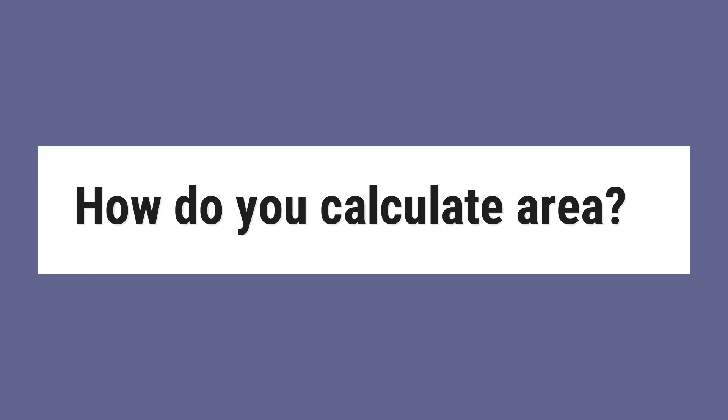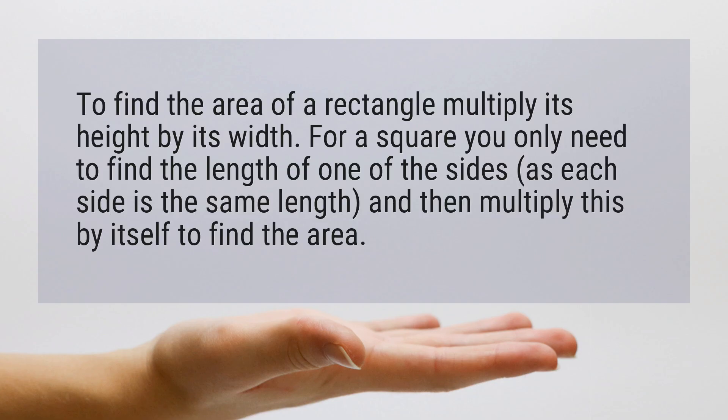How do you calculate area? To find the area of a rectangle, multiply its height by its width. For a square, you only need to find the length of one of the sides, as each side is the same length, and then multiply this by itself to find the area.